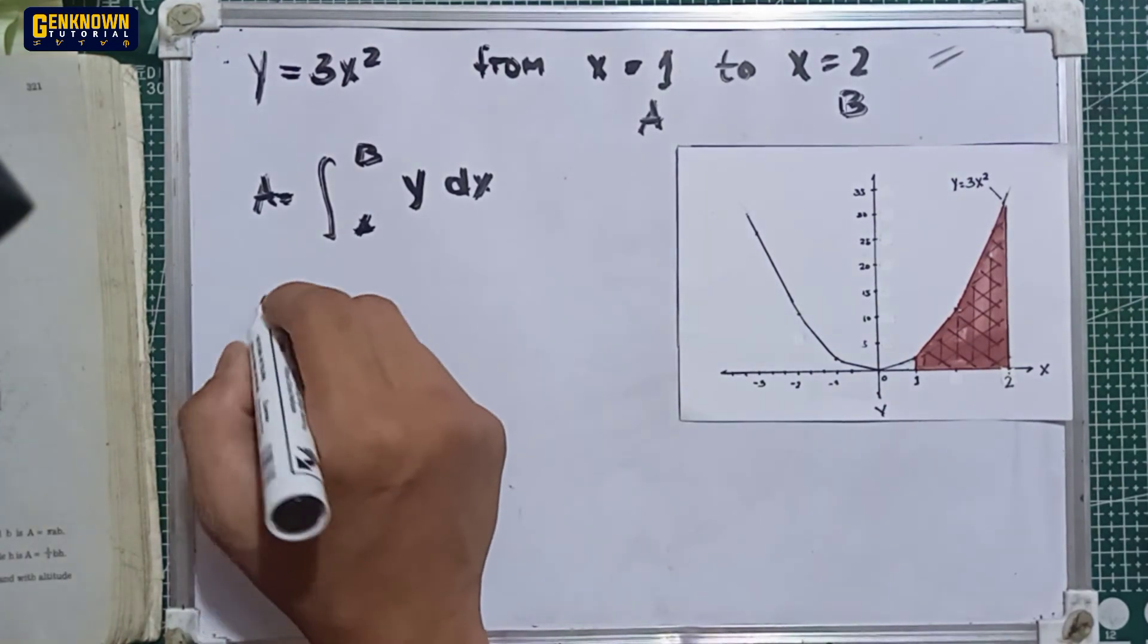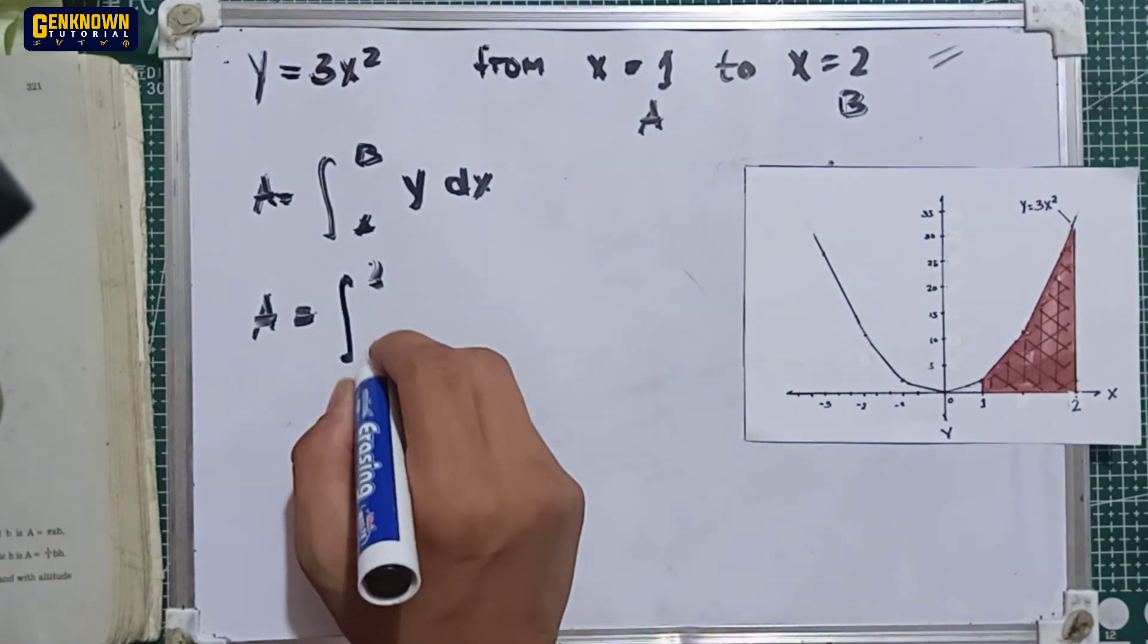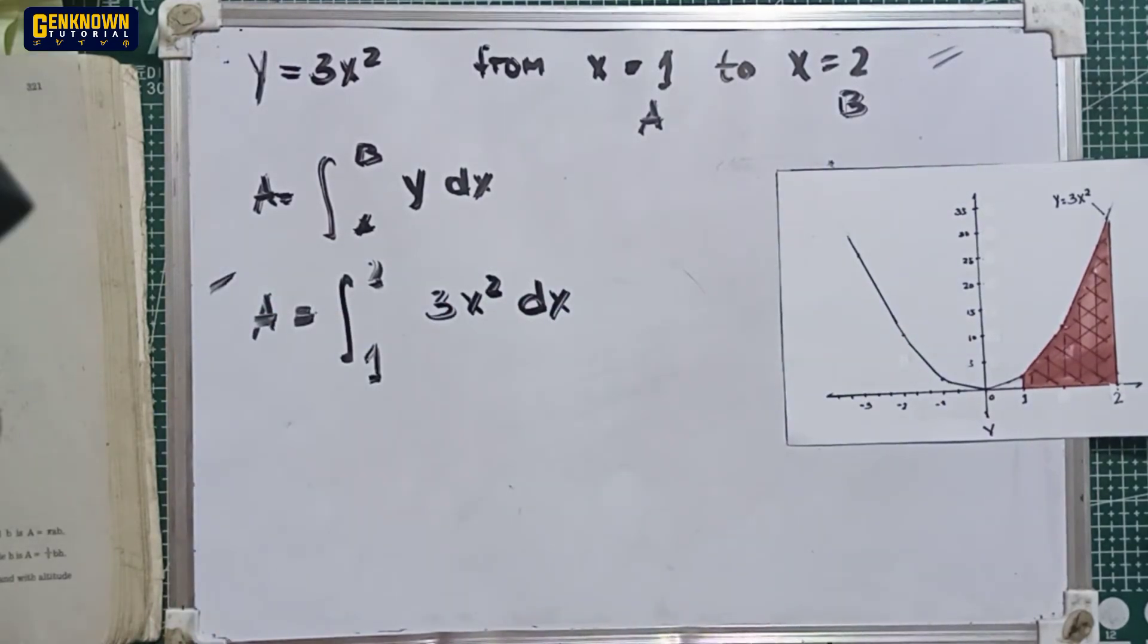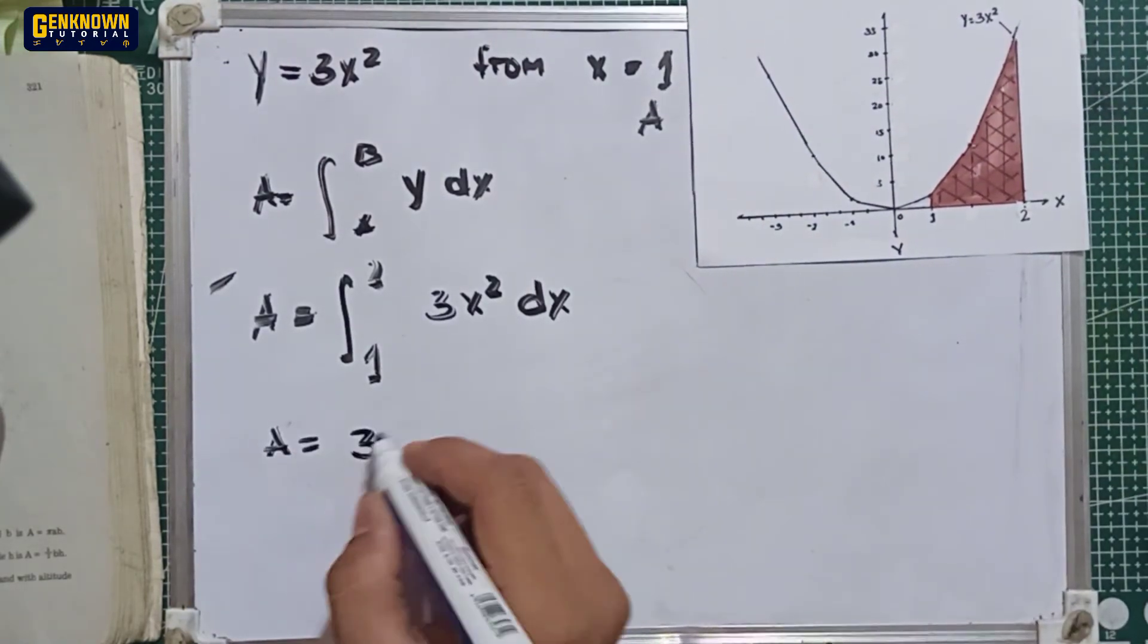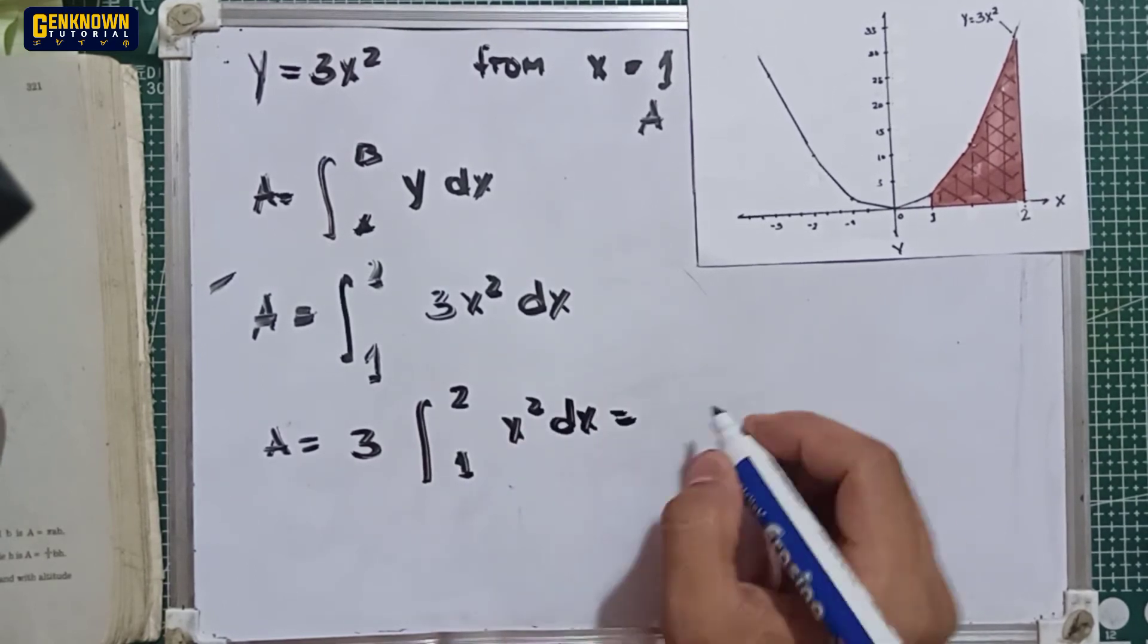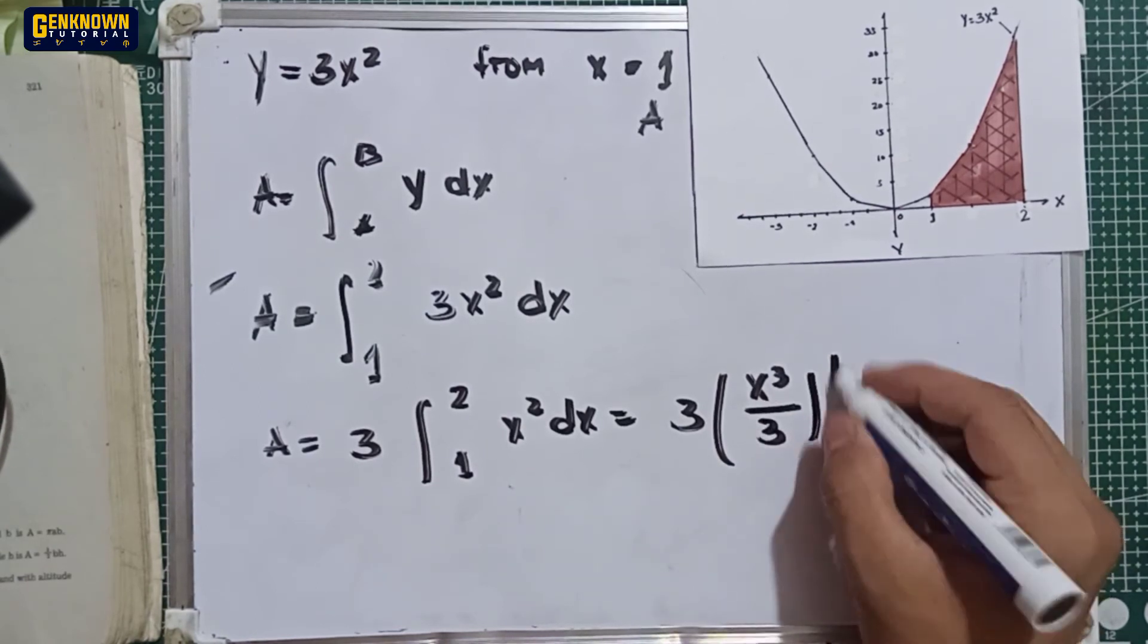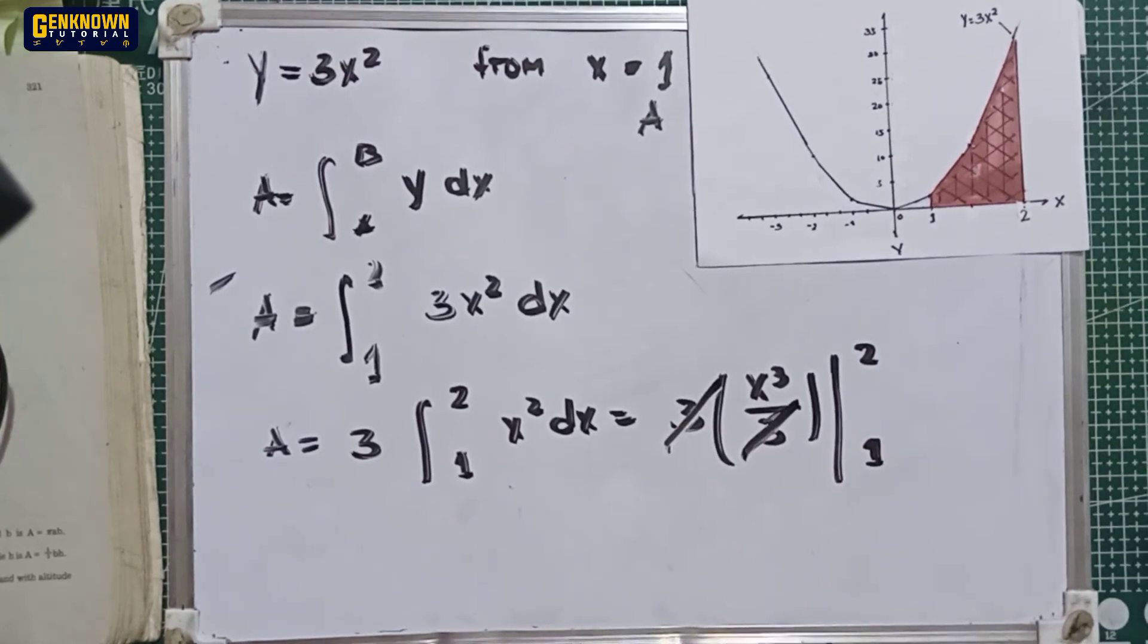The area is equal to the integral of the upper limit b is 2 and lower limit a is 1. y is equal to 3x squared dx. So ito na yung i-integrate natin. Area is equal to 3 integral of x squared dx with the upper limit 2 and lower limit 1. This is equal to 3 multiplied by x cubed over 3 with the upper limit 2 and lower limit 1. So 3 divided by 3 is 1, so we can easily cancel it out.